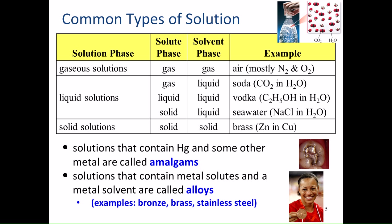There are several common types of solutions. Gaseous solutions have both solute and solvent in the gas phase — air is a good example, mostly nitrogen and oxygen. Liquid solutions include gas dissolved in liquid, like carbon dioxide in soda; liquid-liquid solutions like ethanol in water (vodka); and solid in liquid like sodium chloride dissolved in seawater. Solid solutions are alloys — metal dissolved in metal — such as brass (zinc and copper). Examples of alloys include bronze, brass, and stainless steel.